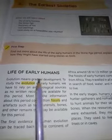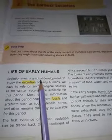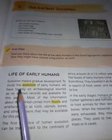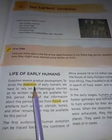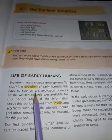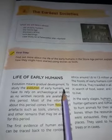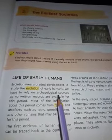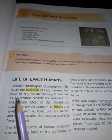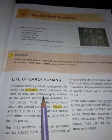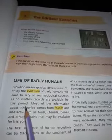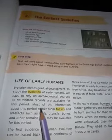Early humans ki kis tarah ki life thi. Evolution means a gradual development — dhire dhire ek dam se change aana, develop aana, changes aana. To study the evolution of early humans, we have to rely on archaeological sources — kuch khudai mein mili cheezein, kuch monuments, kuch inscriptions, ya artifacts, coins per believe karna padega. As no written records are available for this period, koi bhi written mein record nahi hote the.